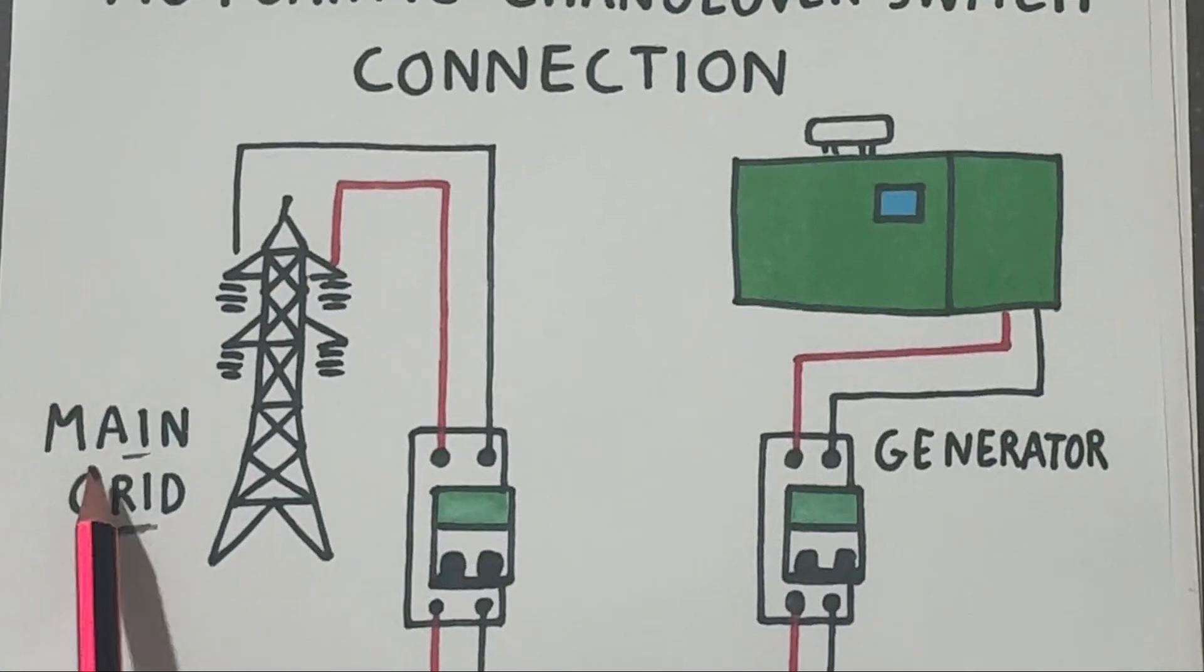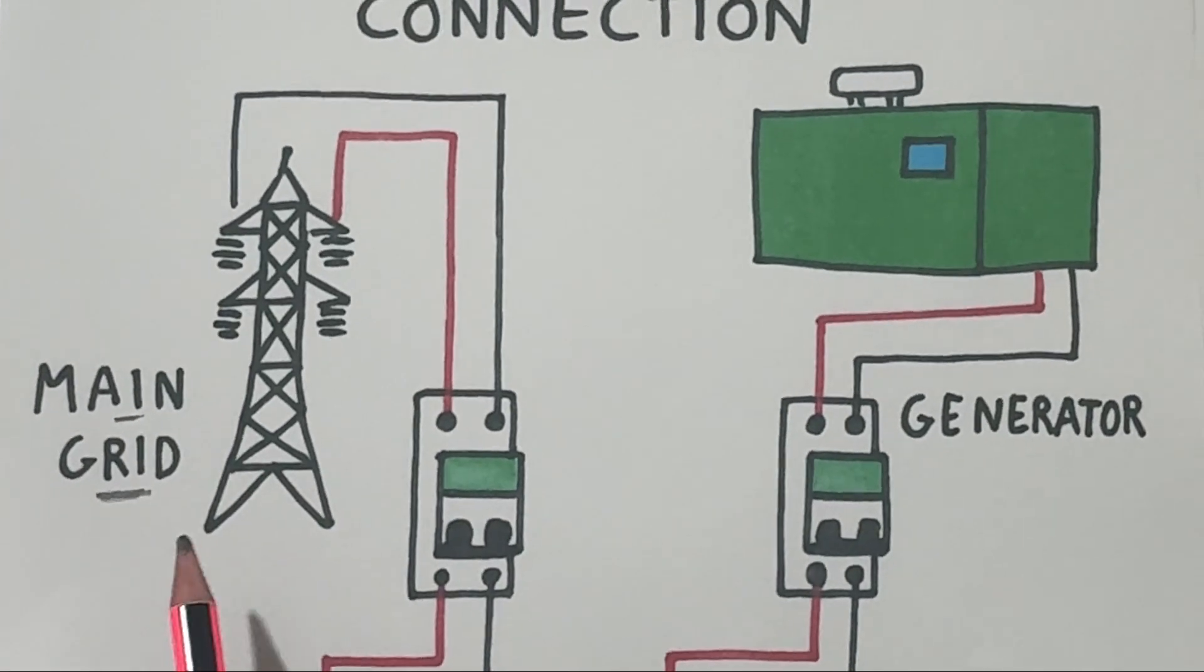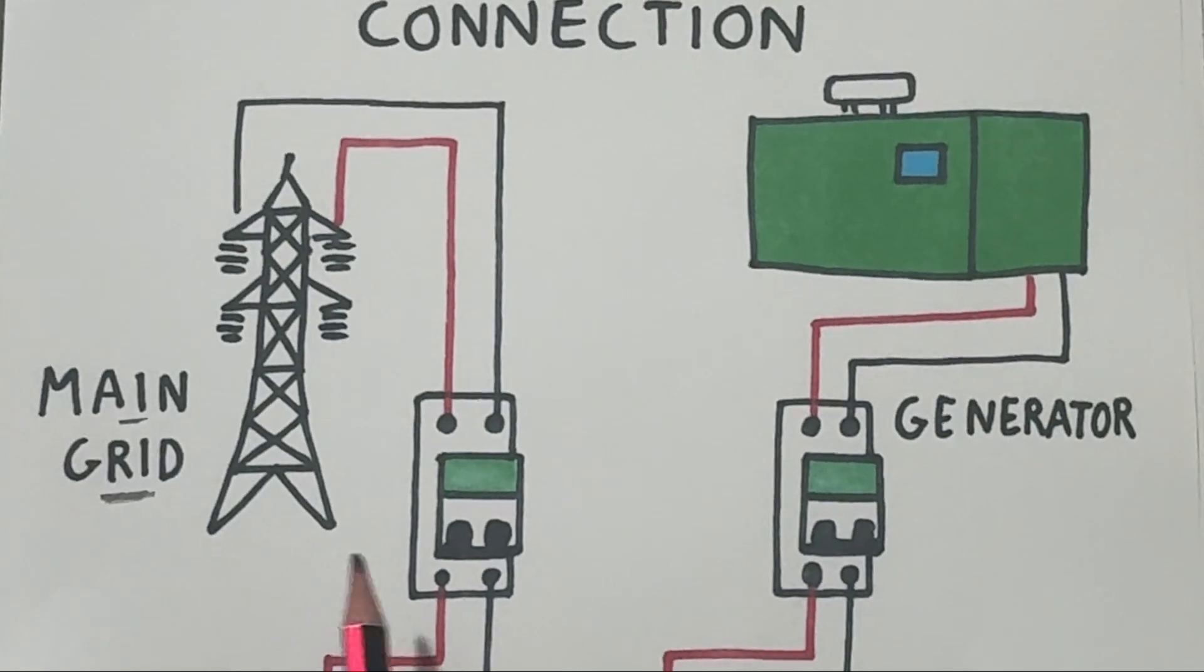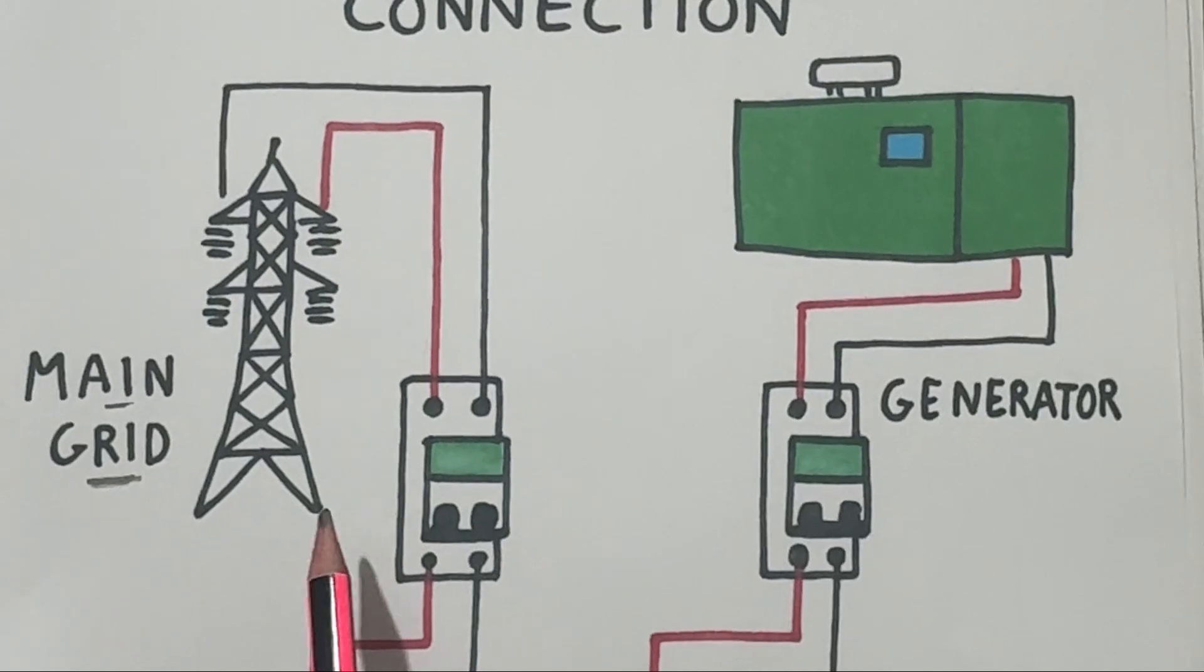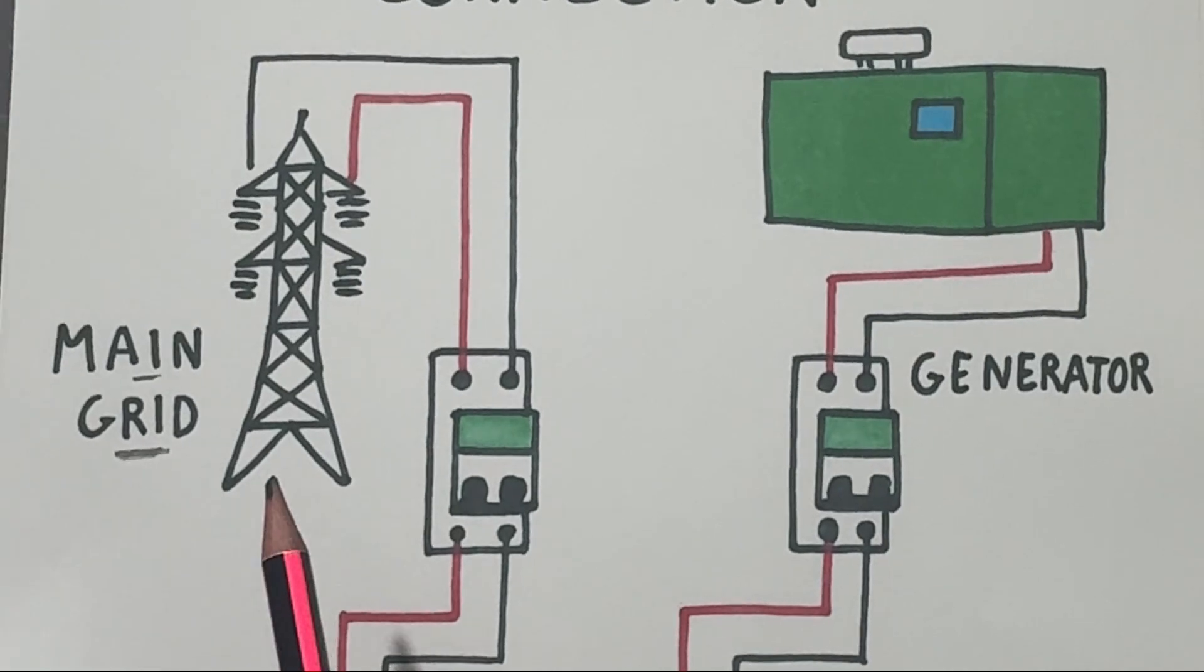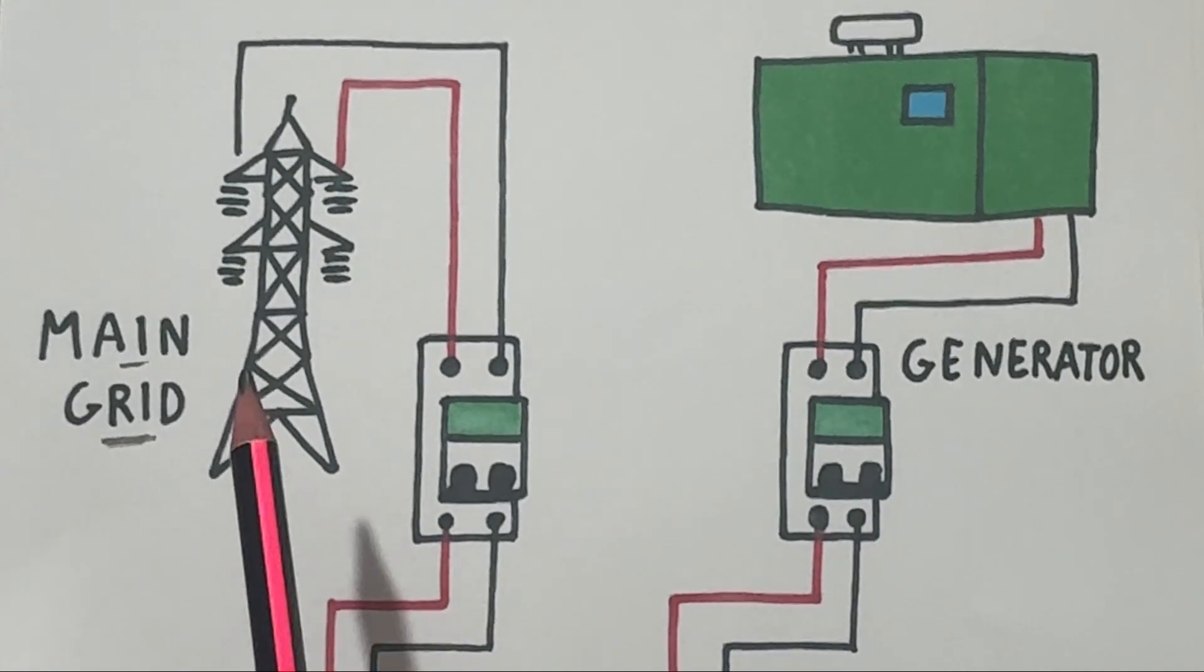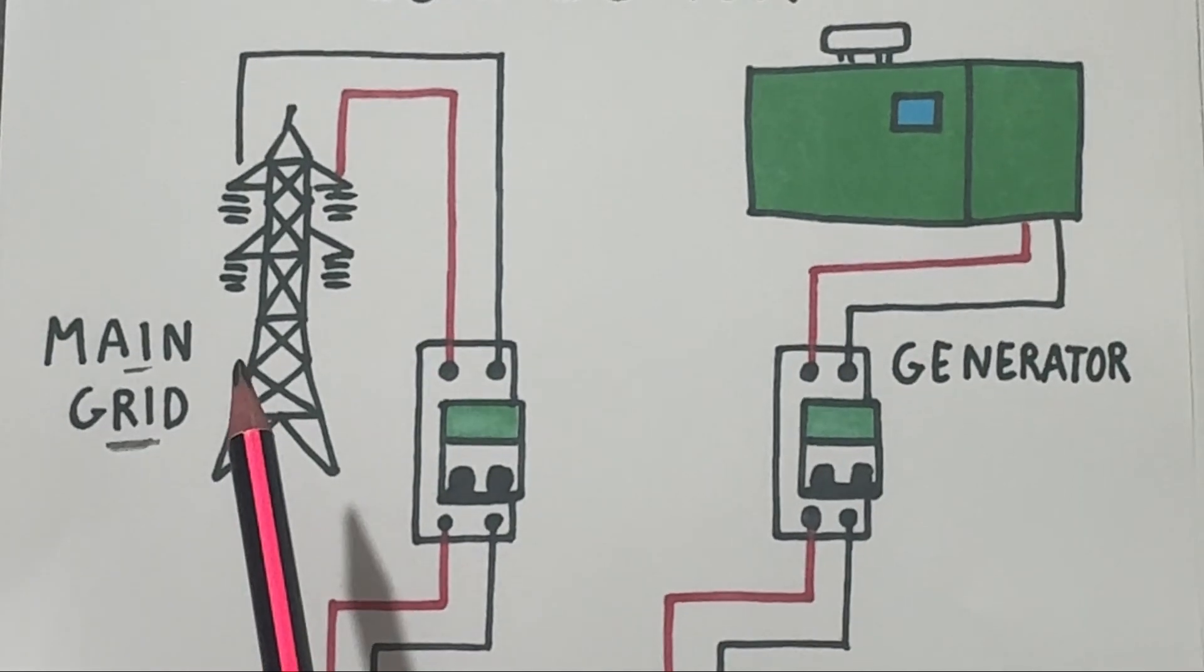Main grid connection. On the left you can see the main power grid. Electricity from the grid enters your building through a breaker, usually an MCP miniature circuit breaker for protection. This is the normal source of electricity that powers your home or business when grid supply is available.